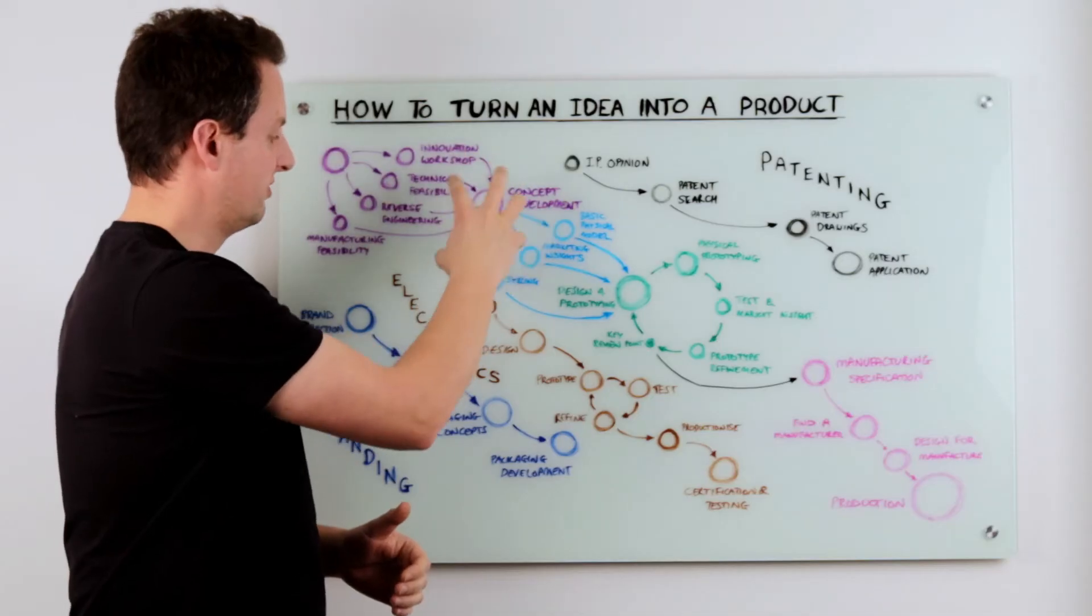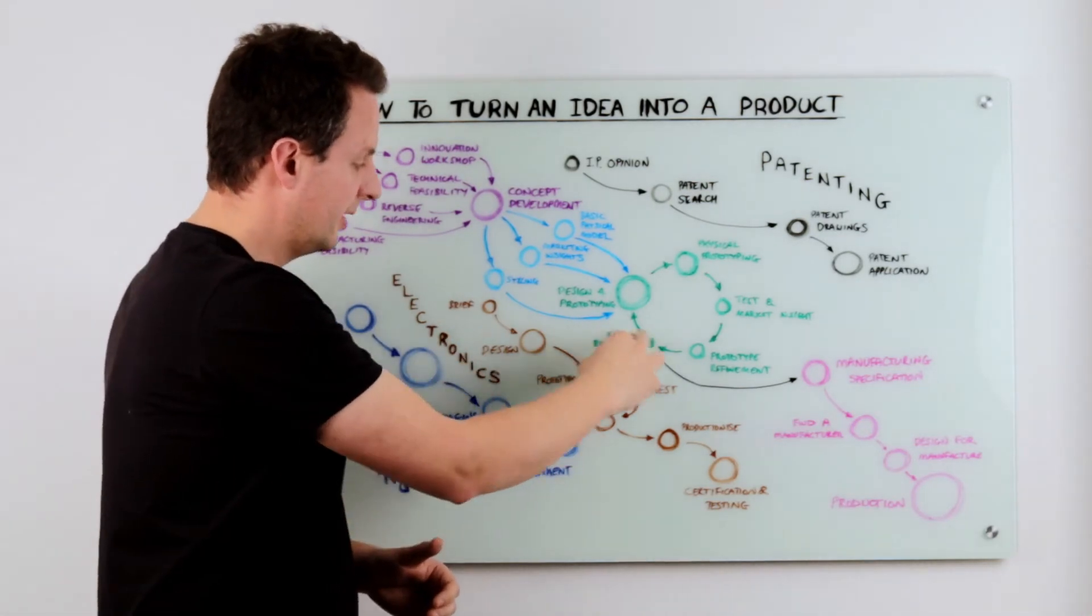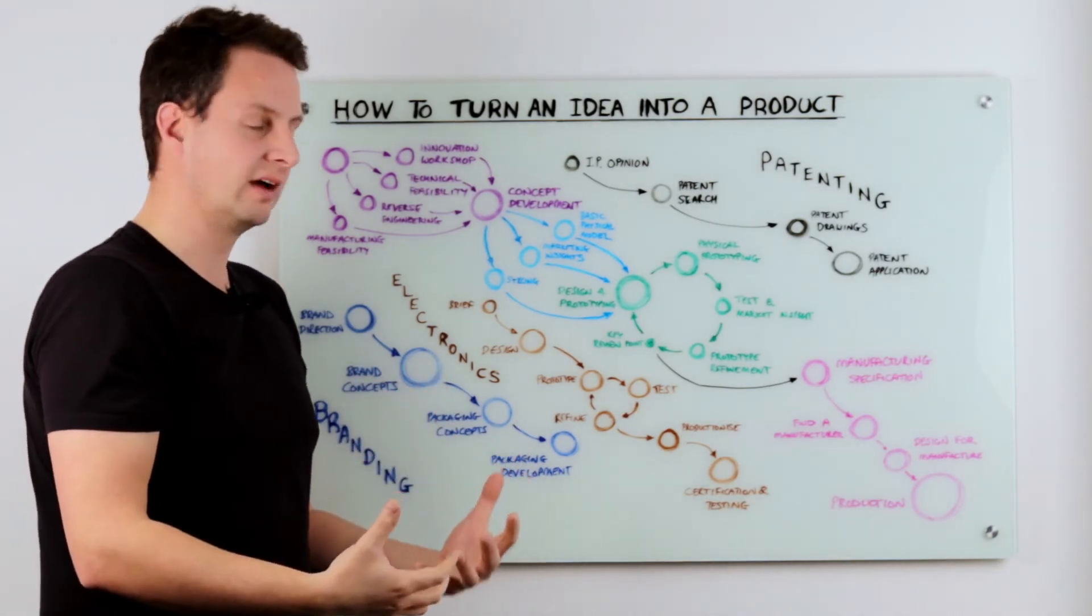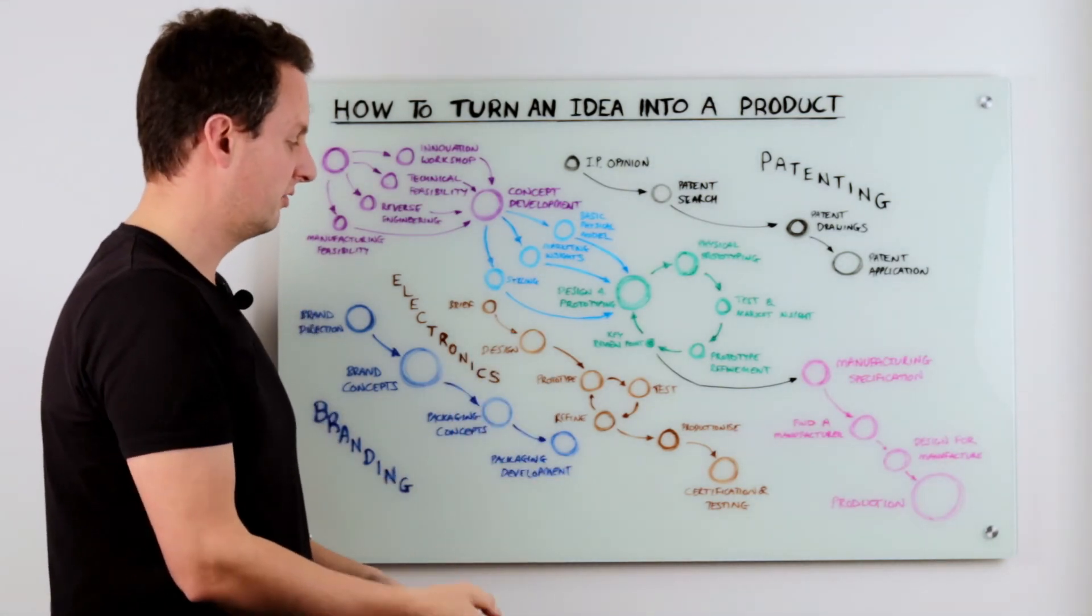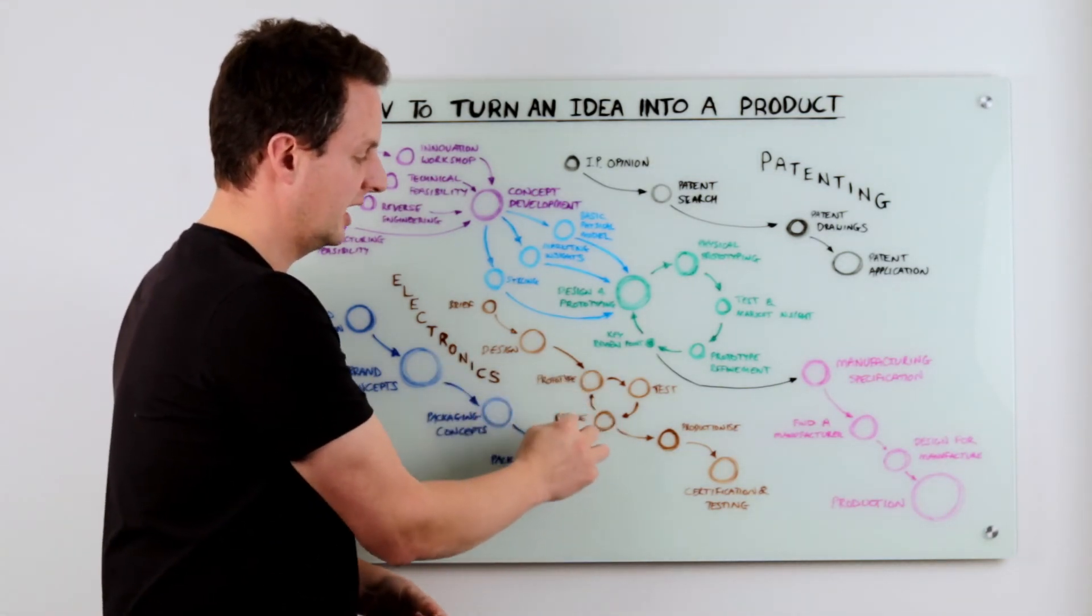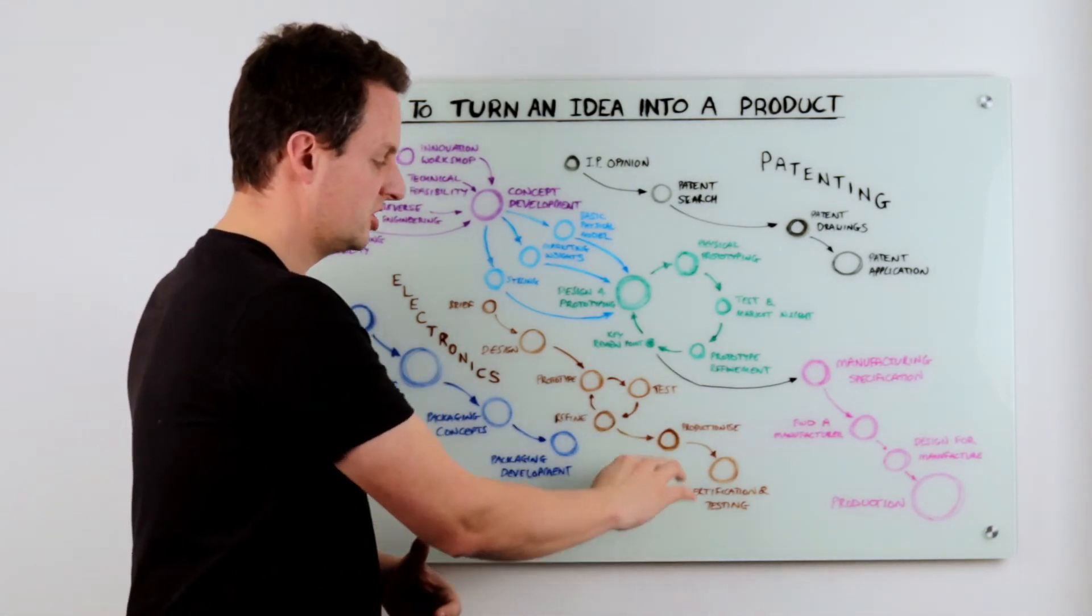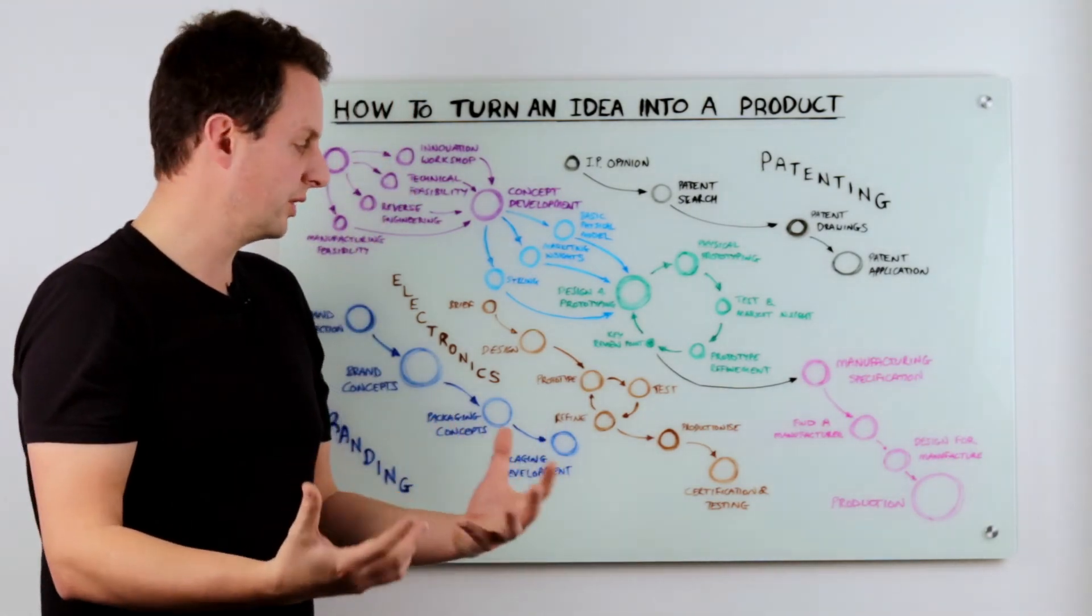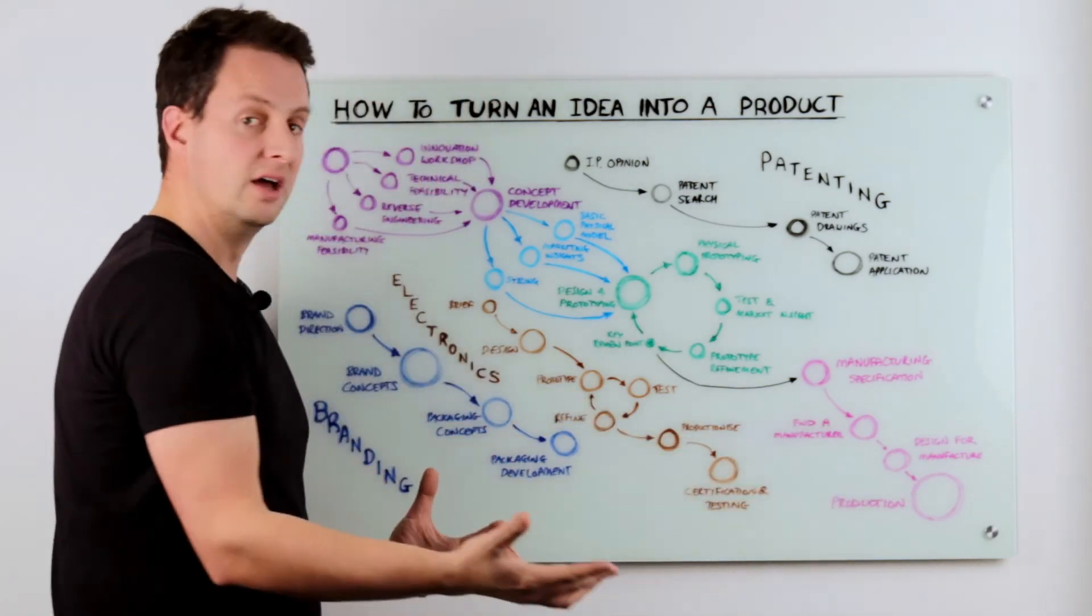Electronics runs roughly alongside product development, so once the concept is defined, you're going to want to start defining the electronics brief and the functionality, and then you're into a prototype loop with your electronics as well to test and refine that functionality, button positions, brightnesses of LEDs, screen types, all of that kind of stuff. And once tested and confirmed again, you're then going to go through a process where that's productionized and made ready for mass production. There's quite a lot of certification and testing that goes on with electronics, CE marking, testing in terms of interference, EMC testing. And then when all of that's done, again that's then ready to mass manufacture.